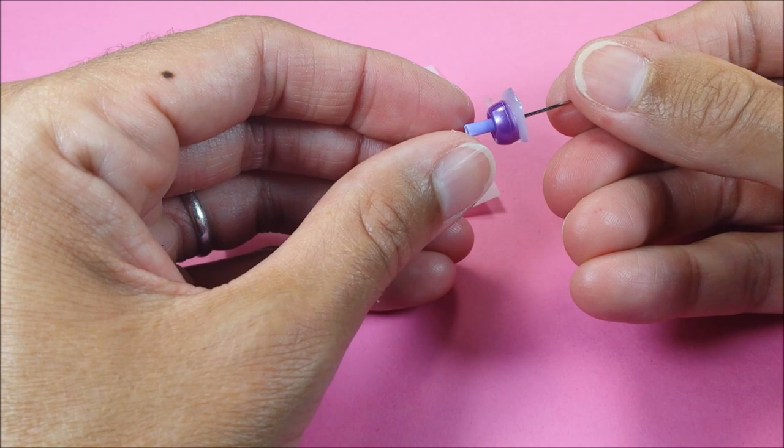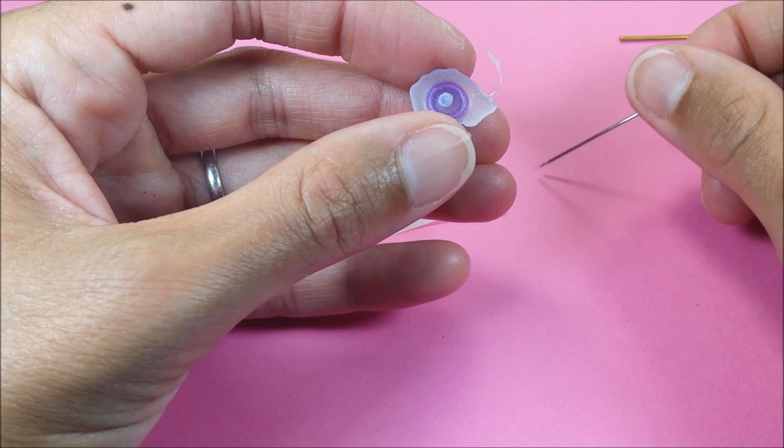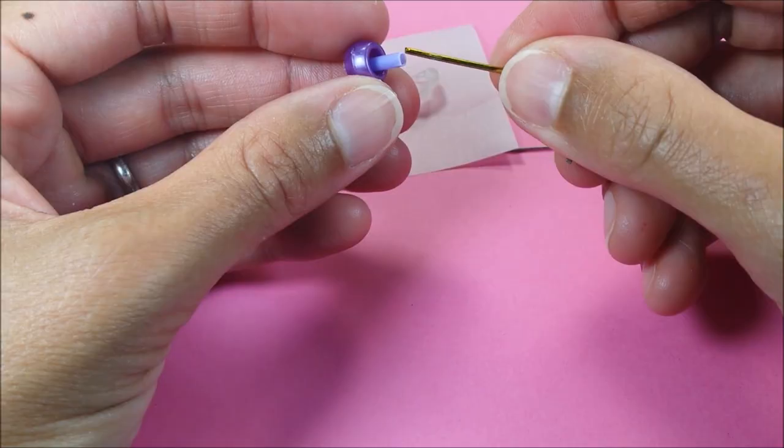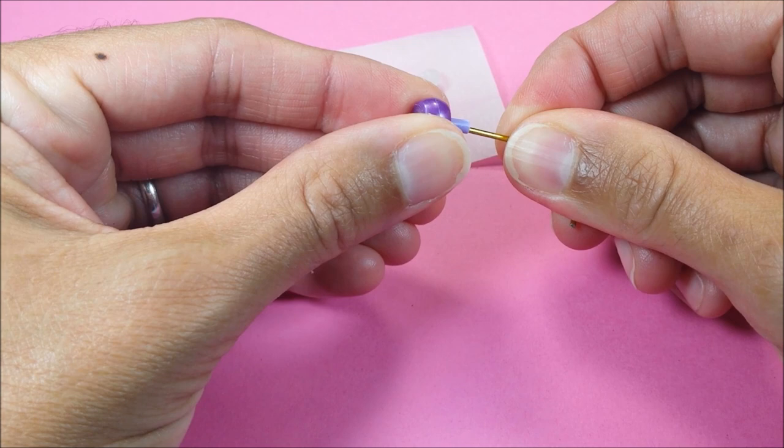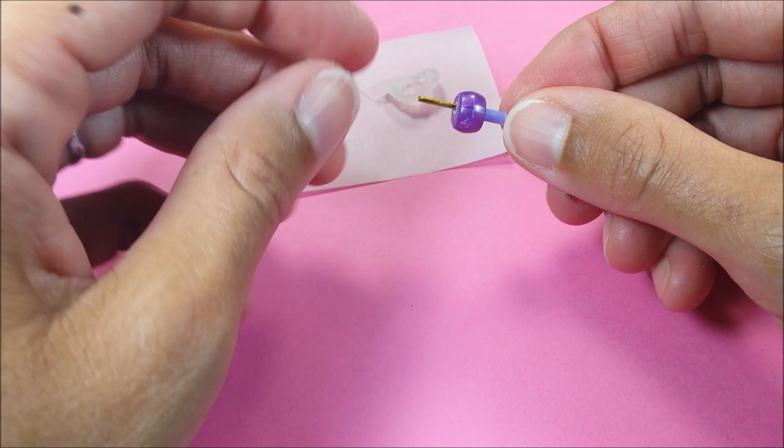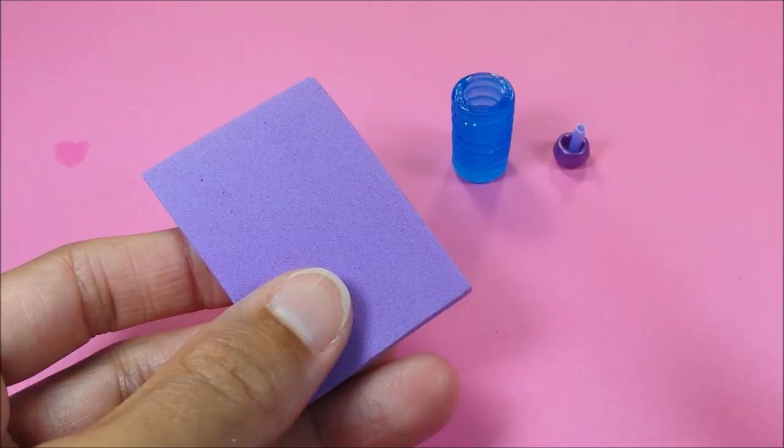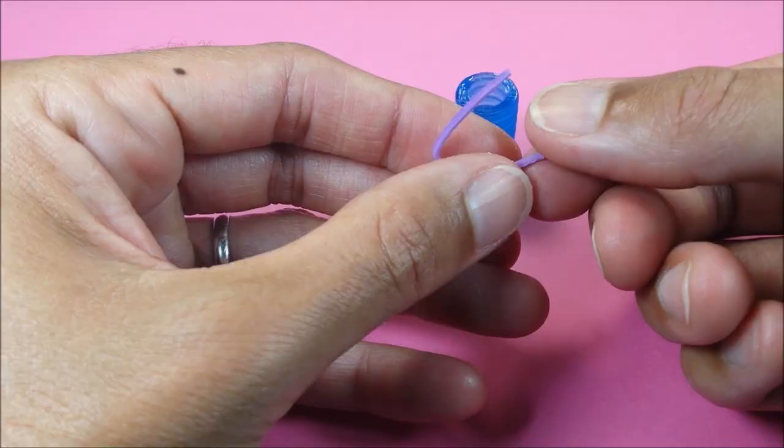I peel away the excess glue from my straw section. Now I slowly try to push this glue out without pulling out my straw. Then I cut out a super thin piece of craft foam, glue it together, and attach it.